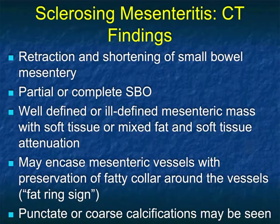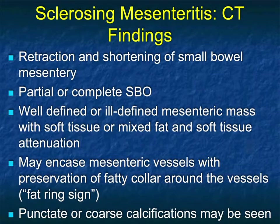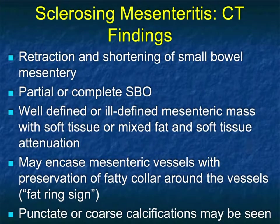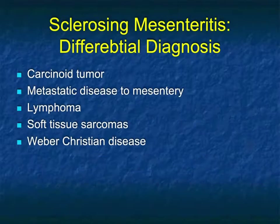On CT, sclerosing mesenteritis shows retraction and shortening of the small bowel mesentery. You can see partial or complete small bowel obstruction, which raises concern for neoplasm. There may be a well-defined or ill-defined mesenteric mass with soft tissue or mixed fat and soft tissue attenuation. It may encase the mesenteric vessels with preservation of a fatty collar around the vessels. Punctate or coarse calcifications may be seen, occurring in about two-thirds of cases.